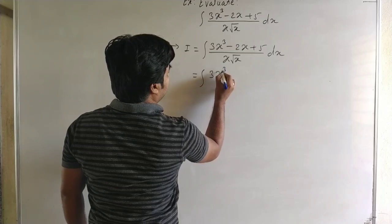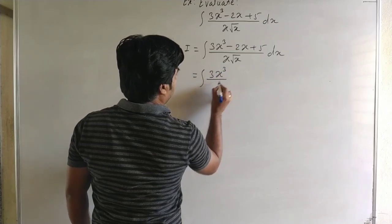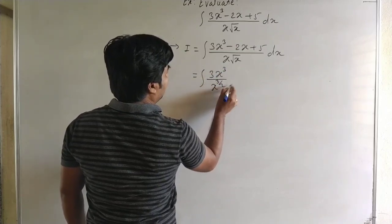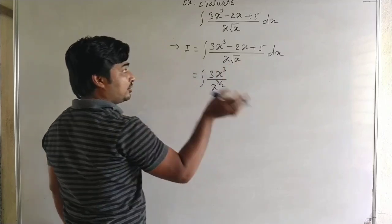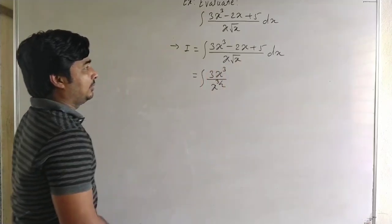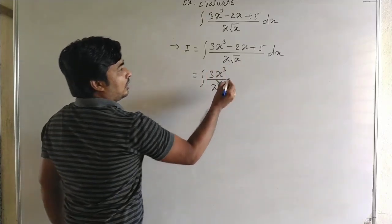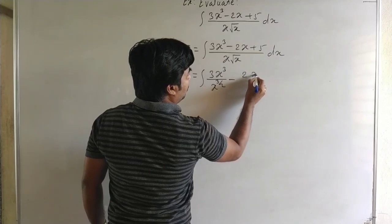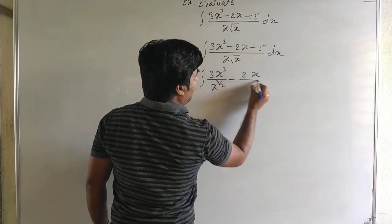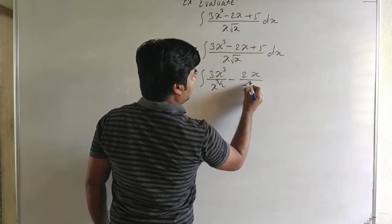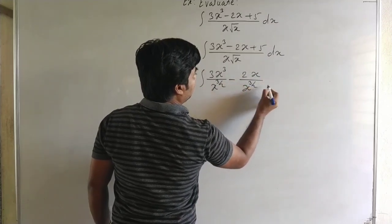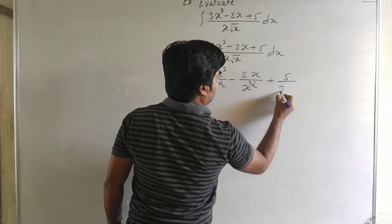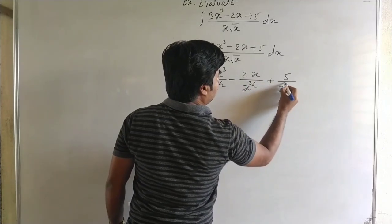Here, 3x cubed upon x to the power 3 by 2, minus 2x upon x to the power 3 by 2, and plus 5 upon x to the power 3 by 2.